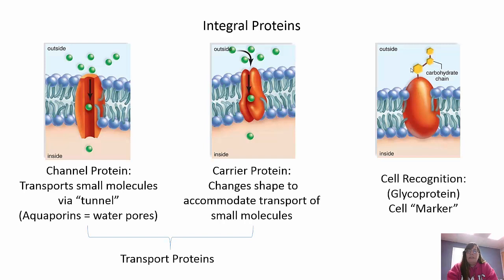Why are integral proteins important? Part of them is for transport. Proteins perform six functions. For transport, you have two types using integral proteins: channel proteins and carrier proteins. Channel proteins have a tunnel that goes all the way through them, transporting small molecules. Aquaporins are an example - they're tunnels for water. Or a carrier protein, where the molecule actually binds to the protein and the protein changes its shape to get that molecule into the cell.